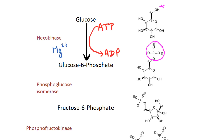The next reaction is going from glucose 6-phosphate to fructose 6-phosphate. This is a reversible reaction and is carried out by phosphoglucose isomerase. Here you can see that a 6-ring structure is changed to a 5-ring structure.